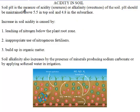Soil pH is the measure of acidity or sourness, or alkalinity and sweetness of the soil. For a soil, it should have its pH between 5.5 in the topsoil and 4.8 in the subsurface. Any pH less than this in the topsoil will be too acidic, and any pH greater than this will be too basic.